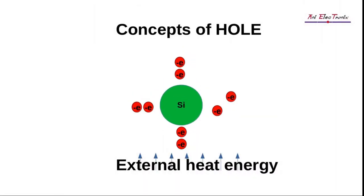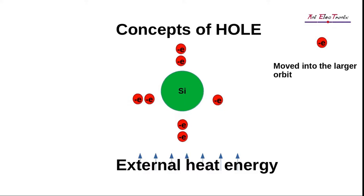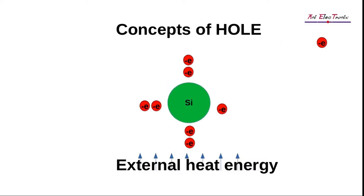The atom's motions can knock an electron out of the valence orbit. The same electron has now accumulated enough energy from the external heat energy to jump into the larger orbit. A hole is the space created by an electron in valence orbit.